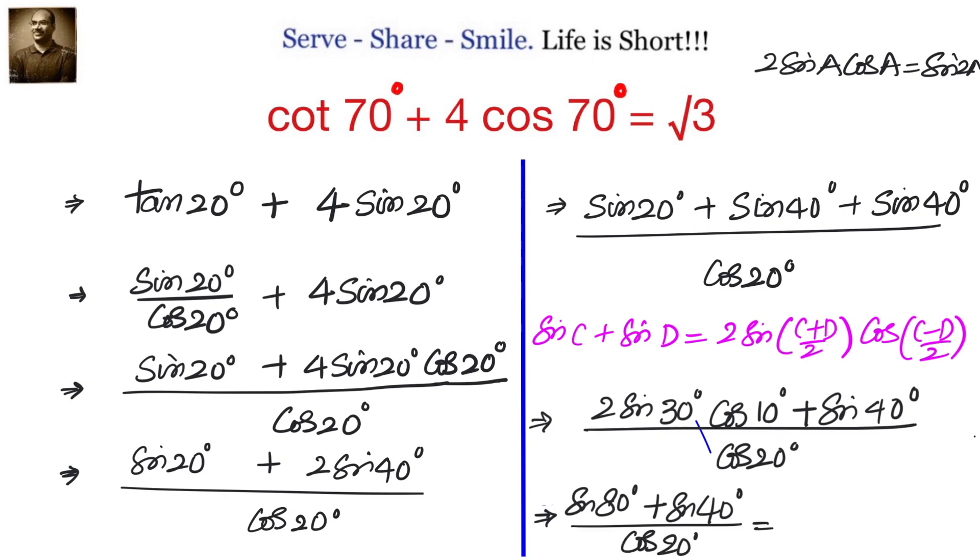Again we apply the transformation from sum to product. We have 2 sin 60 degrees cos 20 degrees divided by cos 20. Cos 20 will cancel. 2 sin 60 equals root 3. So cot 70 plus 4 cos 70 equals root 3.